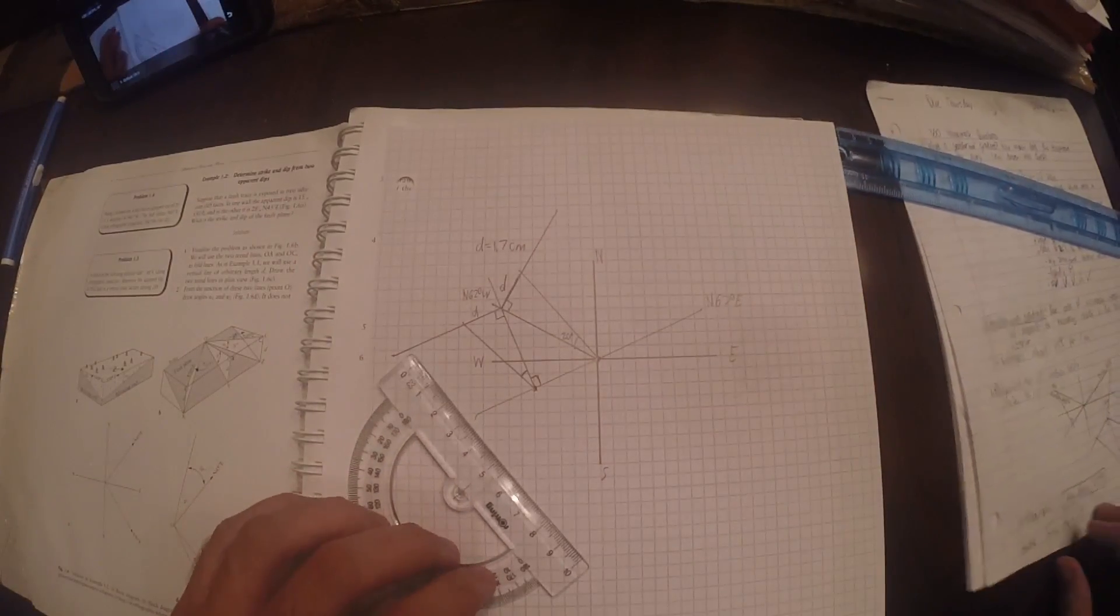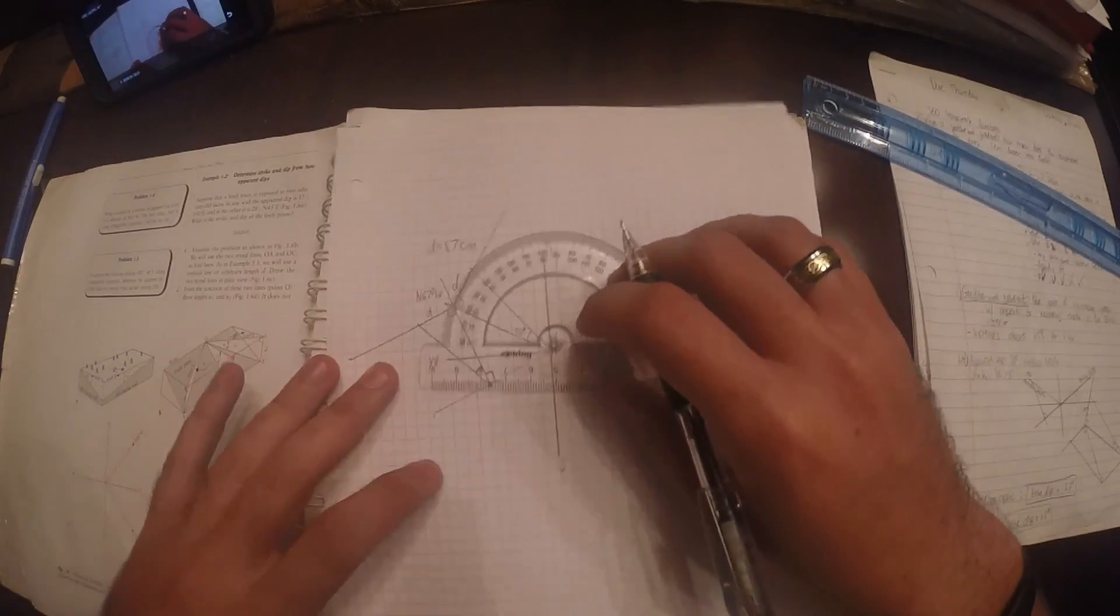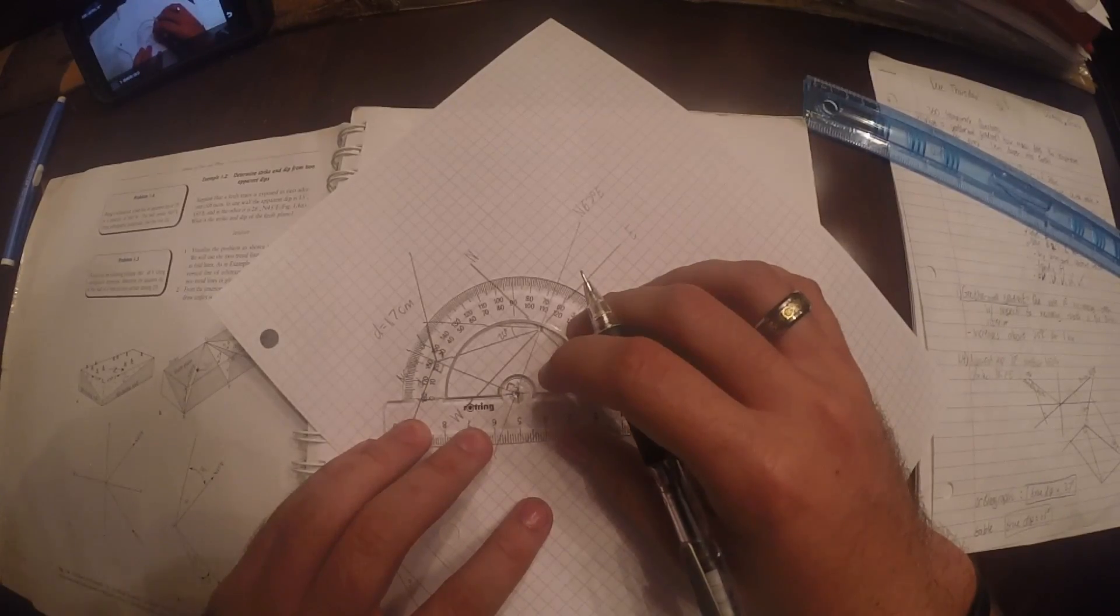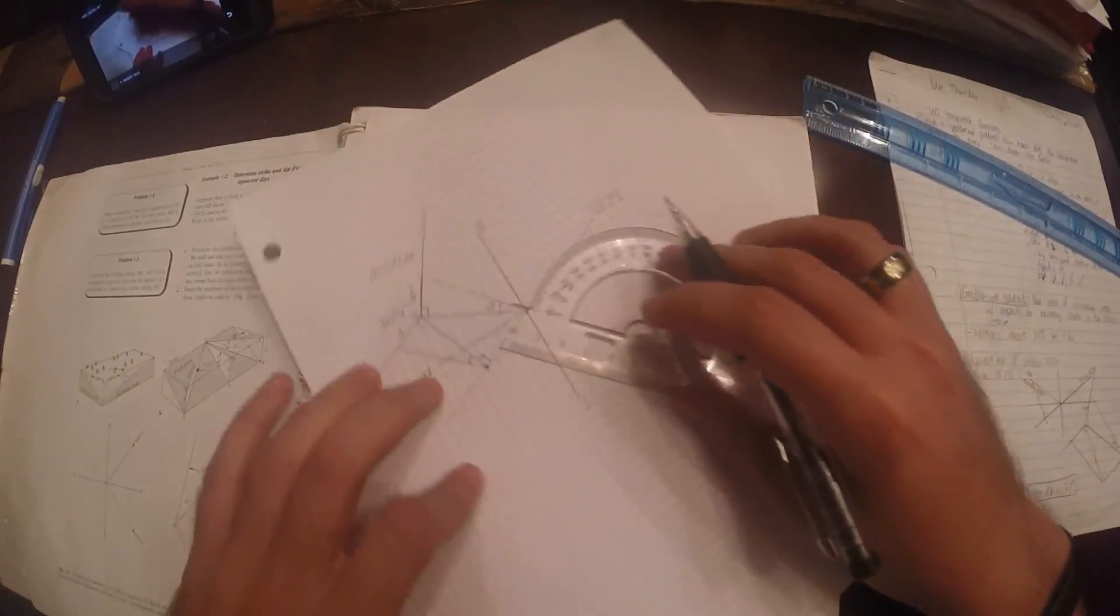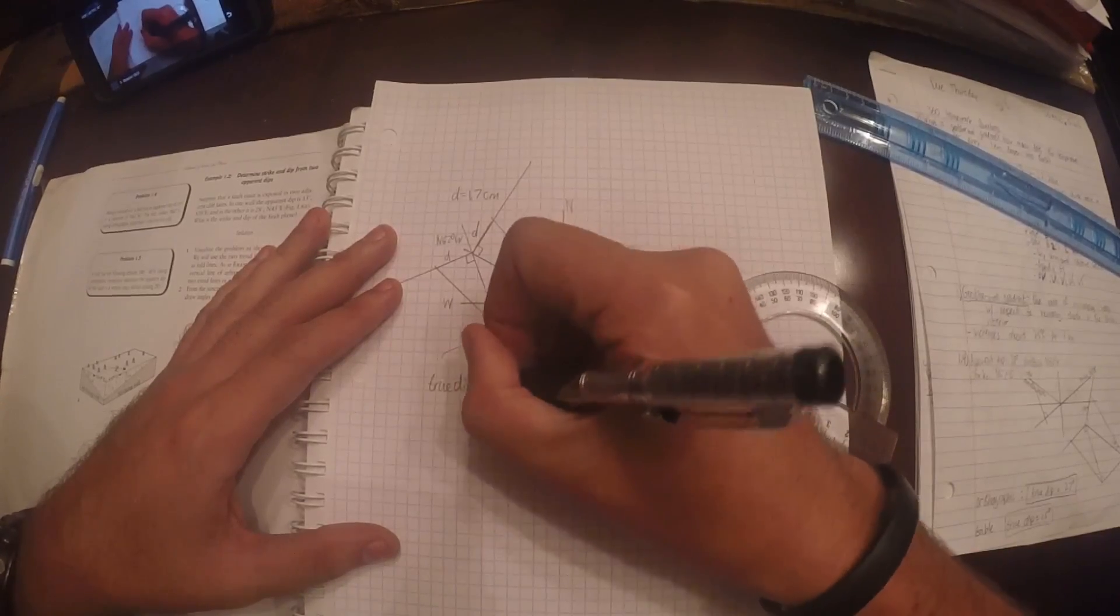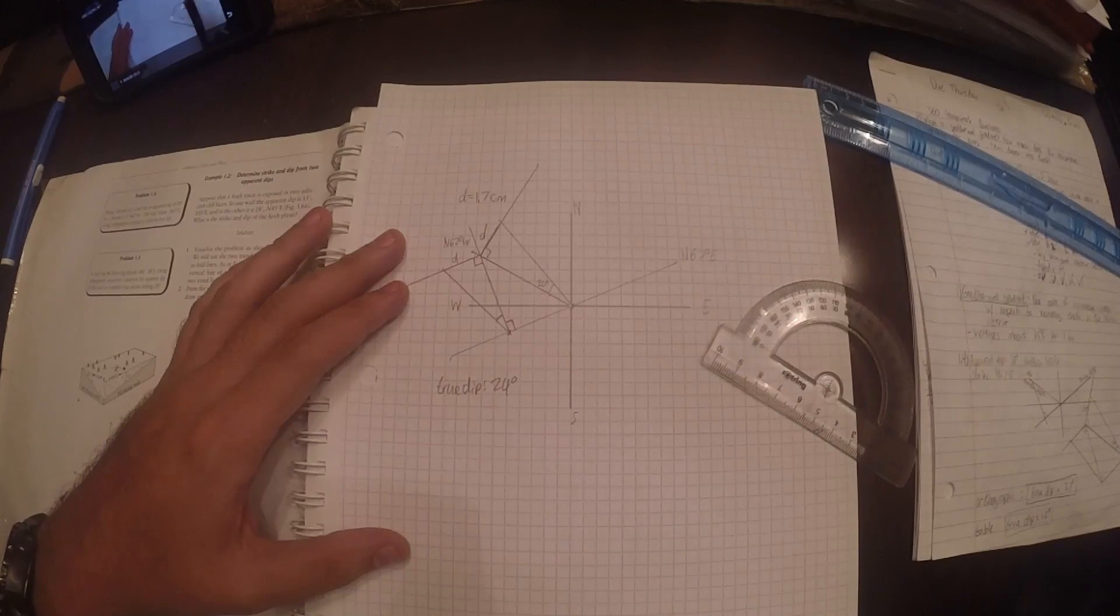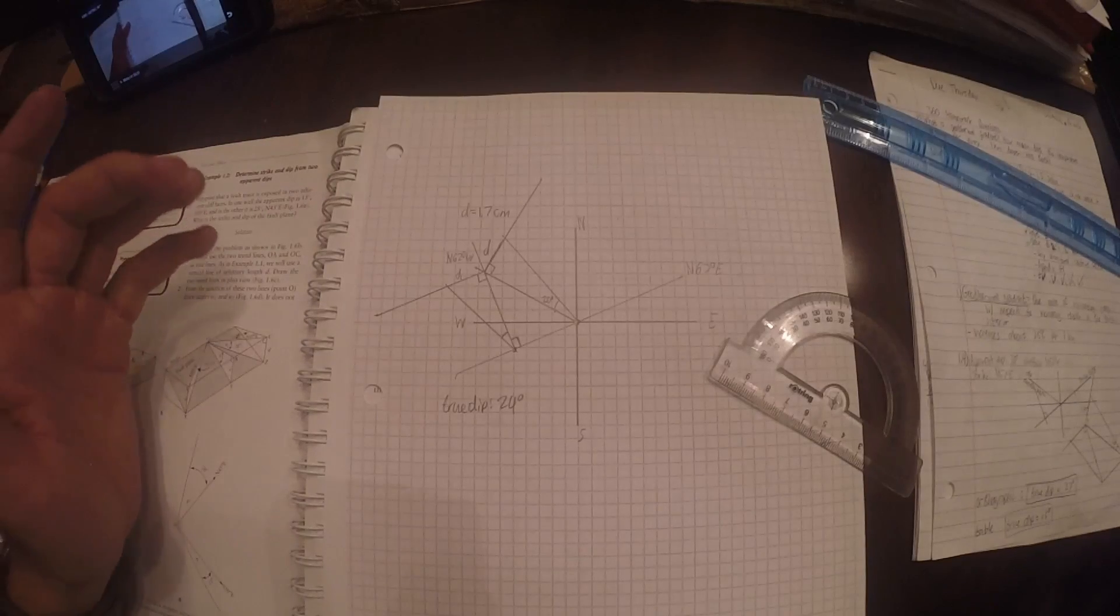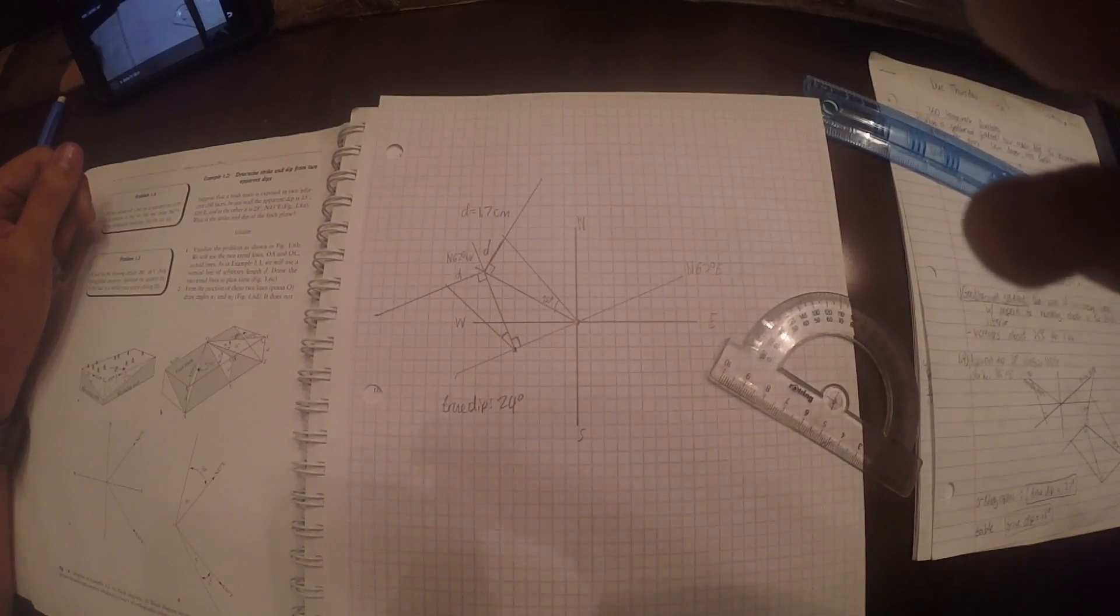And let's see. Previously, I got 27 degrees. So, let's see what I get this time. I get 20. Okay, so 24. So, I did it slightly differently, but. So, the true dip. True dip is 24 degrees. I hope that's helped. I know a lot of people having problems with this. It's not simple.